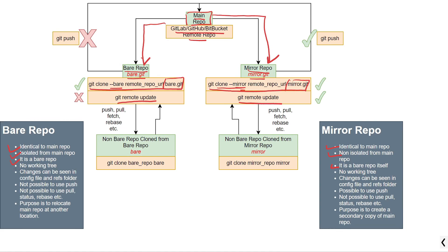Both repositories won't contain any working tree information. If you compare the config file and refs folder of the bare repository and the mirror repository, you will be able to see the differences in terms of configuration between these two repositories.